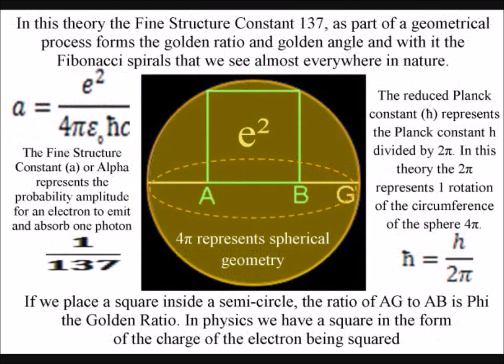We know that the electron is spherical, and with this info we know that we have to square the radius of the sphere to get the surface area. Therefore, we have a square of charge as a constant within this geometrical process.